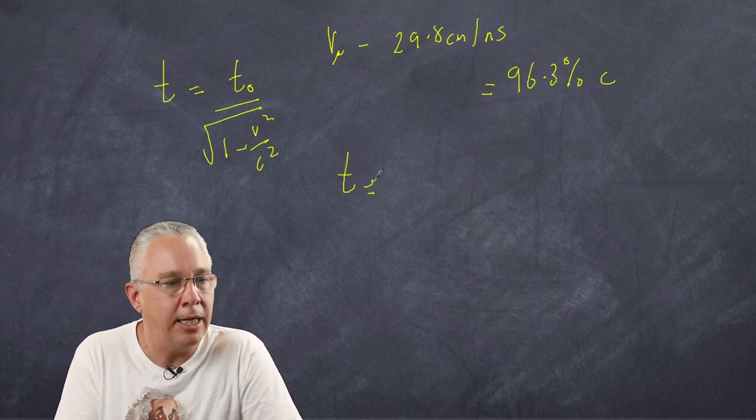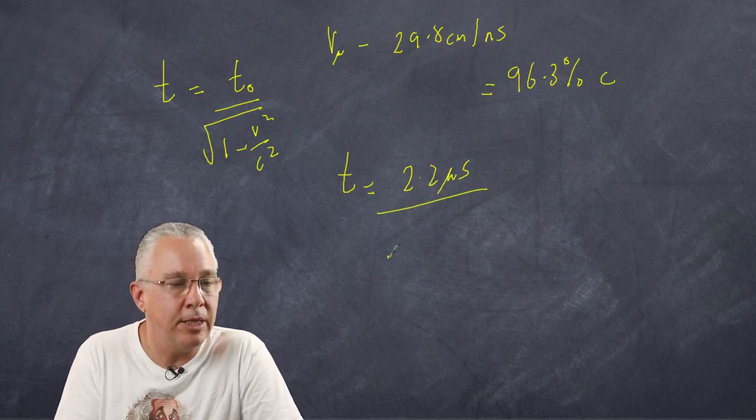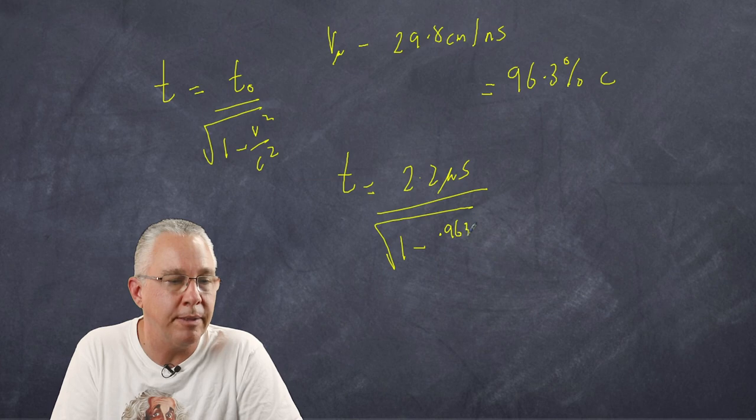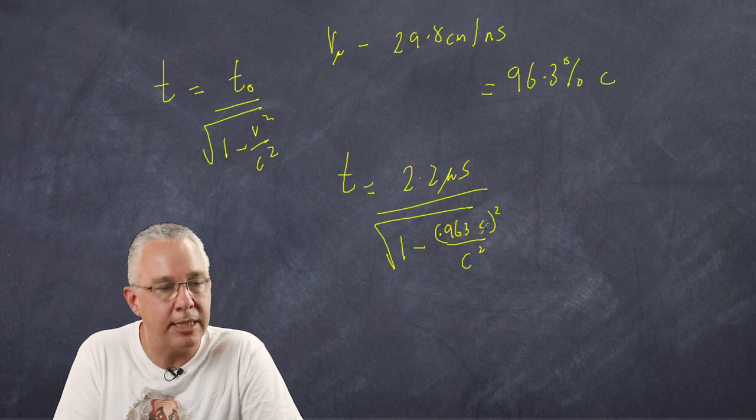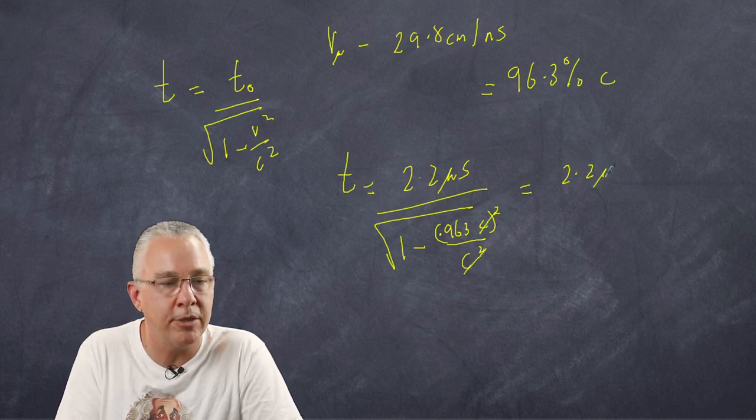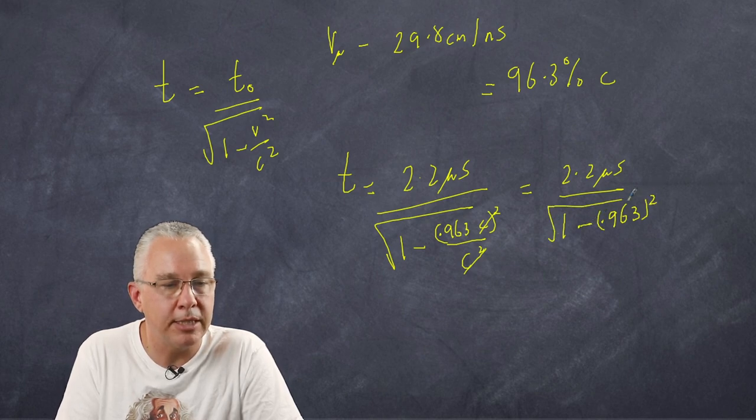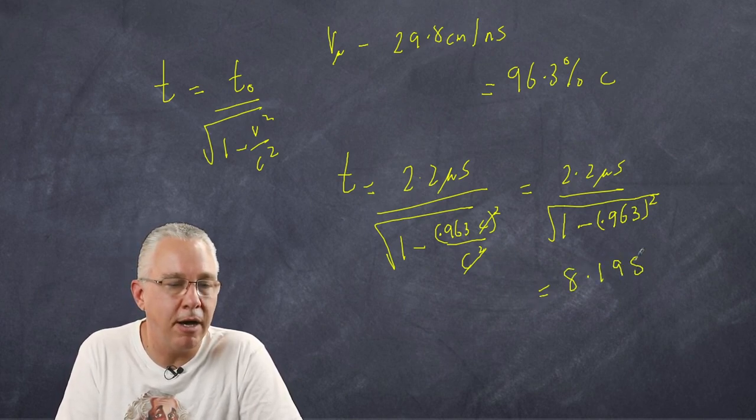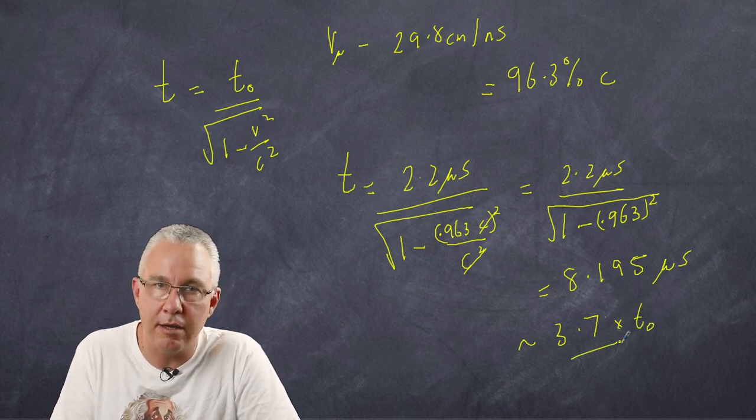So we're interested in t. Our t naught, the measured half-life at rest frame of a muon is 2.2 microseconds and then we do the square root of 1 minus. Now the number is a fraction here for v so if we put 0.963 multiplied by of course c over c and of course both the top and the bottom are squared. Now the good thing is that you can see that this c squared cancels out with this c squared so you end up getting 2.2 microseconds over 1 minus 0.963 all squared and of course that's the square root thereof and when we calculate that out we're going to get a value of 8.195 microseconds that's approximately 3.7 times the rest half-life of our muon.